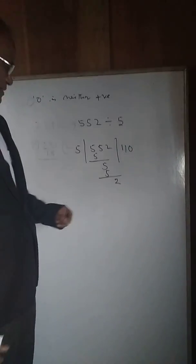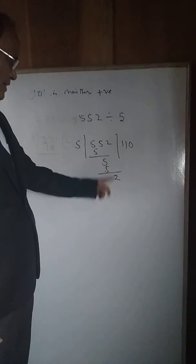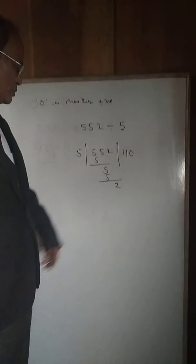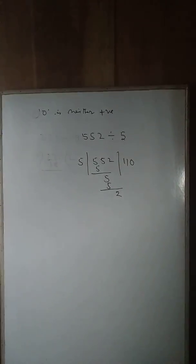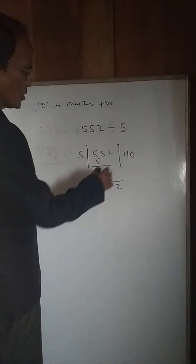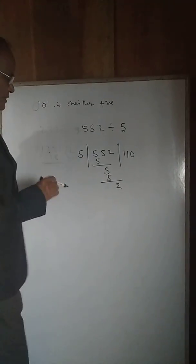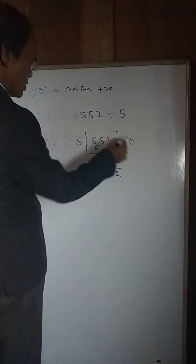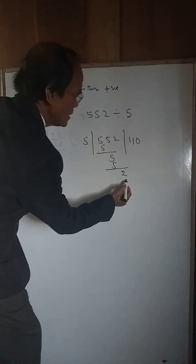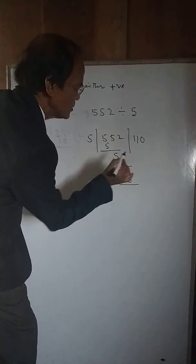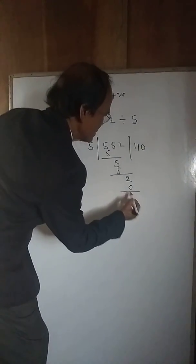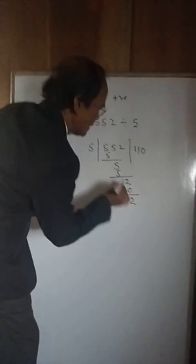It is not yet the remainder because nothing is subtracted from 2. So we are just keeping zero here, but the division should be continued. When you multiply zero and 5, you have to keep here zero, then we have to subtract it. It becomes 2.